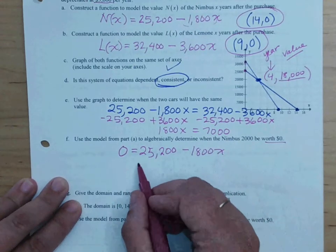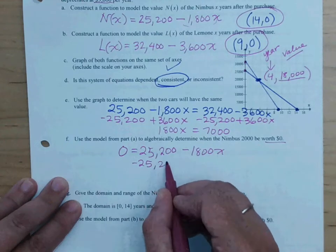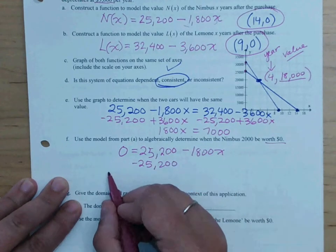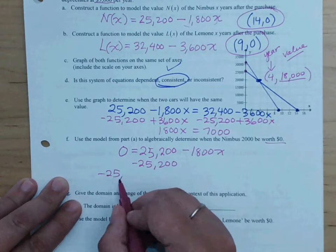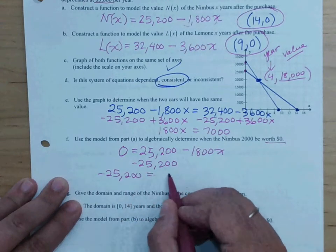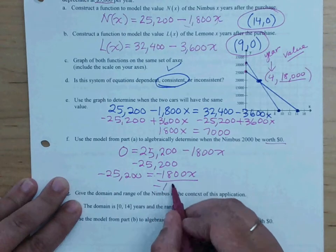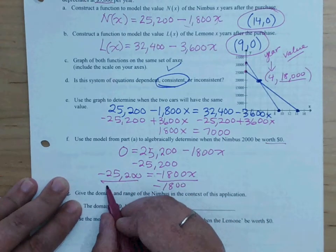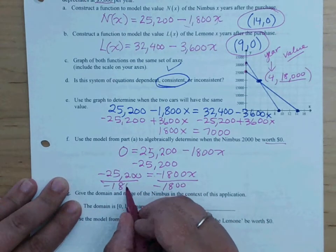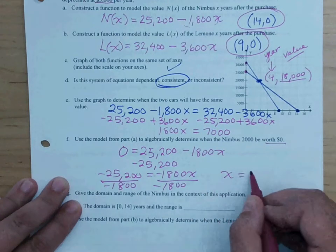Essentially, when we solve this for x, 25,200 equals negative 1,800x, divide by negative 1,800, we will get x equals 14.